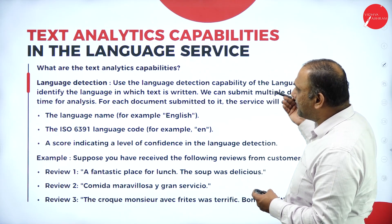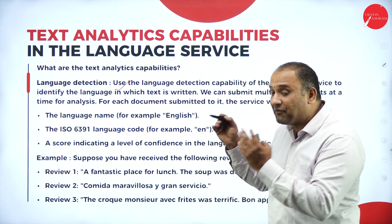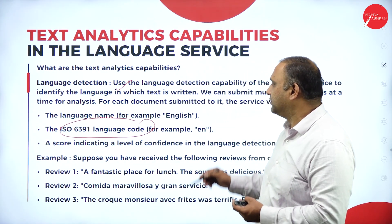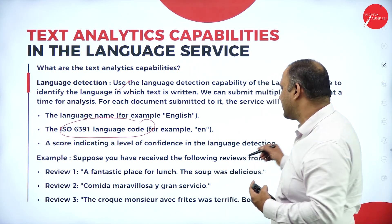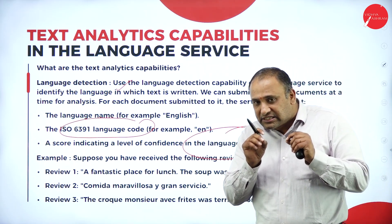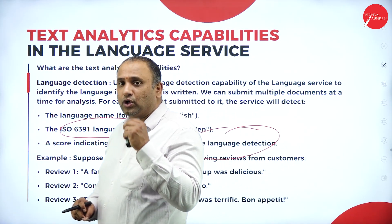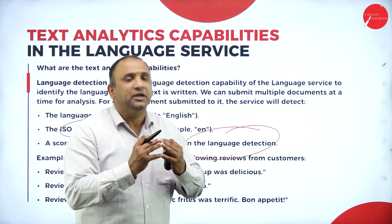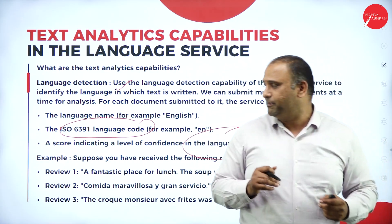The capabilities in a language service include language detection. There is an ISO standard — the ISO 639-1 language code — which is in English, with the language name 'English.' A score is used to indicate the confidence in the language detection. This is very important — how confident and how well the system is built in terms of understanding the language from a system standpoint.